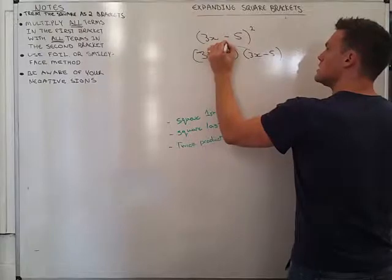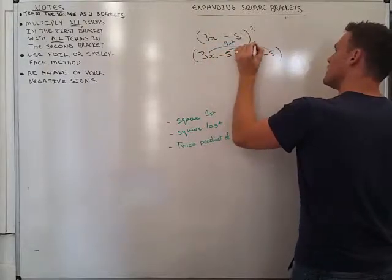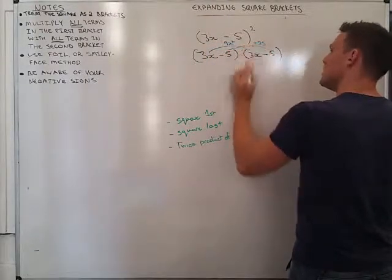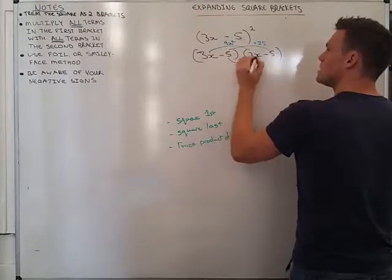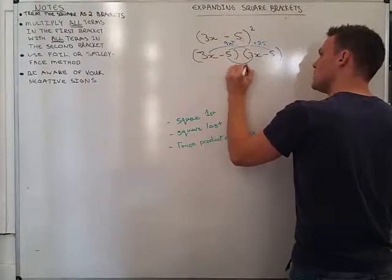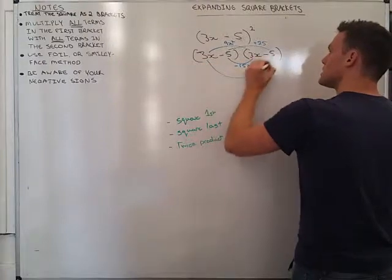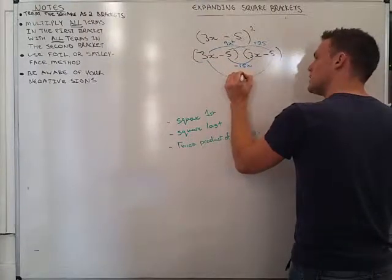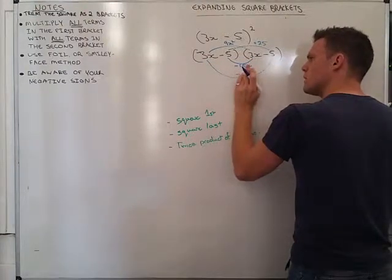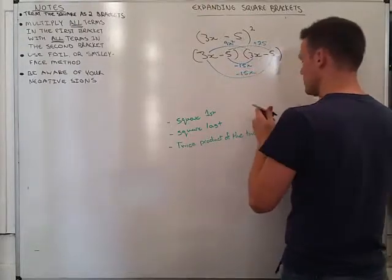So, 3x times 3x is 9x squared. Negative 5 times negative 5 is plus 25. And I'm going to do negative 5 times 3x is going to give me negative 15x. And 3x times negative 5 is negative 15x as well.